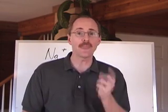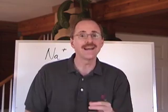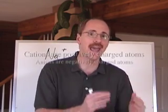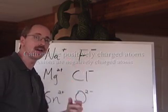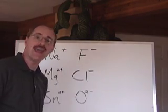Generally, it's between a metal and a nonmetal, or a cation and an anion. So, Na positive here is the cation and F negative, the anion.